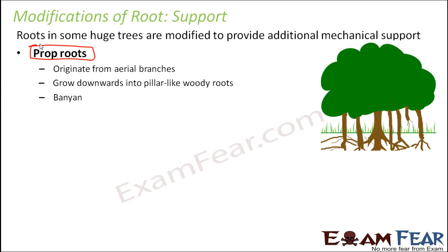Let's look at this picture. Have you ever seen a banyan tree? This is how it looks. If you look at the top of the tree, it's huge — it spreads on both sides and occupies a large area. This was the main root of the plant, but as the tree keeps growing, from the aerial branches, several branches of this tree develop.